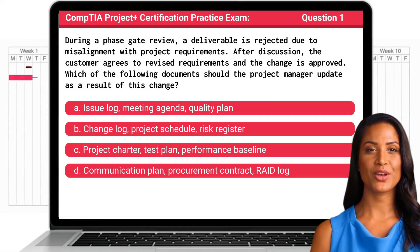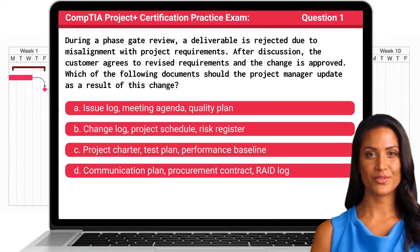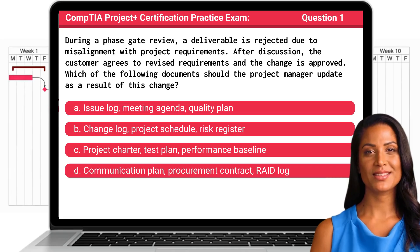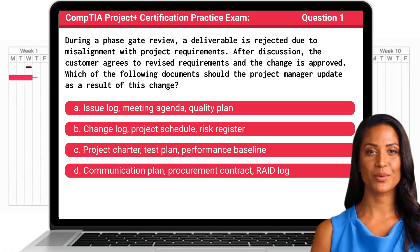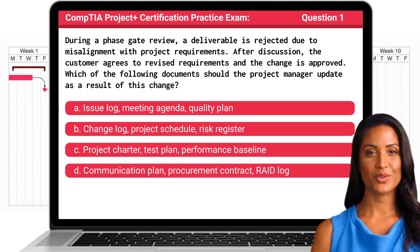Question 1. During a phase gate review, a deliverable is rejected due to misalignment with project requirements. After discussion, the customer agrees to revised requirements and the change is approved. Which of the following documents should the project manager update as a result of this change?